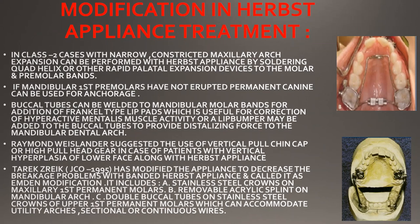These are all four anchorage systems. Now, what are the modifications of the Herbst appliance? In Class 2 cases with a narrow, constricted maxillary arch, expansion can be performed with the Herbst appliance by soldering a quad helix or other rapid palatal expansion devices to the molar and premolar bands. This allows expansion of the maxillary arch while using the Herbst appliance simultaneously.